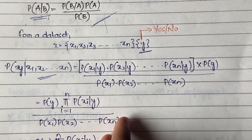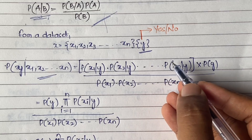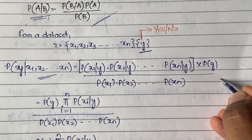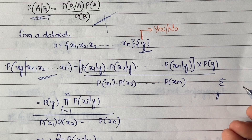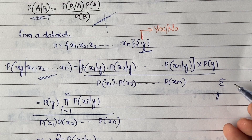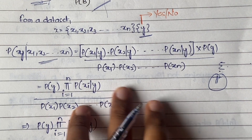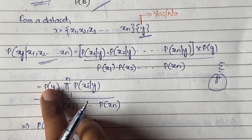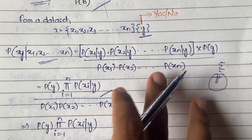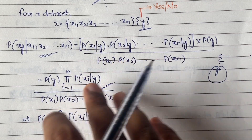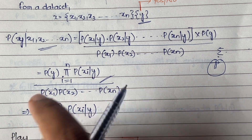You can represent the multiplication using pi notation — just as sigma is used for summation (addition), pi is used for multiplication. So P(y) is taken out and the product runs from i=1 to n of P(xi|y). This is the general representation, and the denominator contains the same terms.